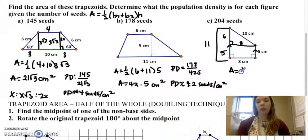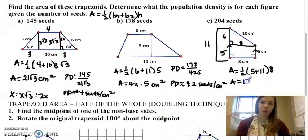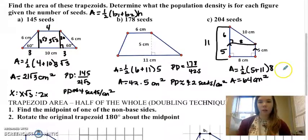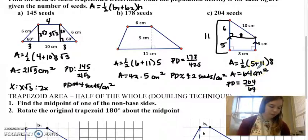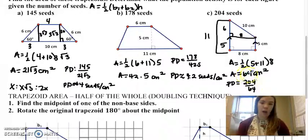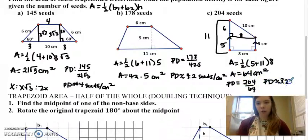So I have area equals 1 half 5 plus 11 times 8 is 64 square centimeters. So then to find my population density, I'm going to take 204 divided by 64. And that is going to round to 3.2 seeds per square centimeter.